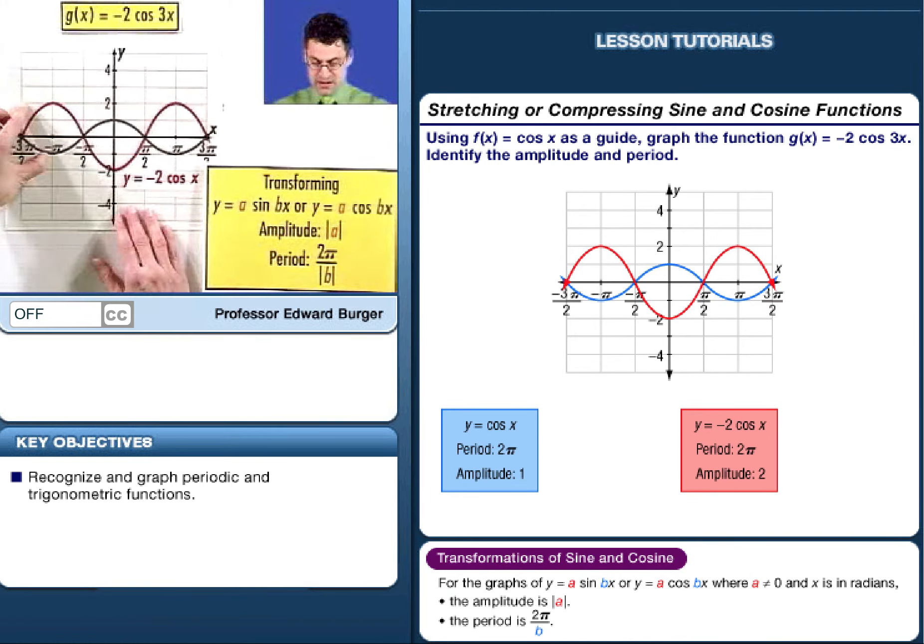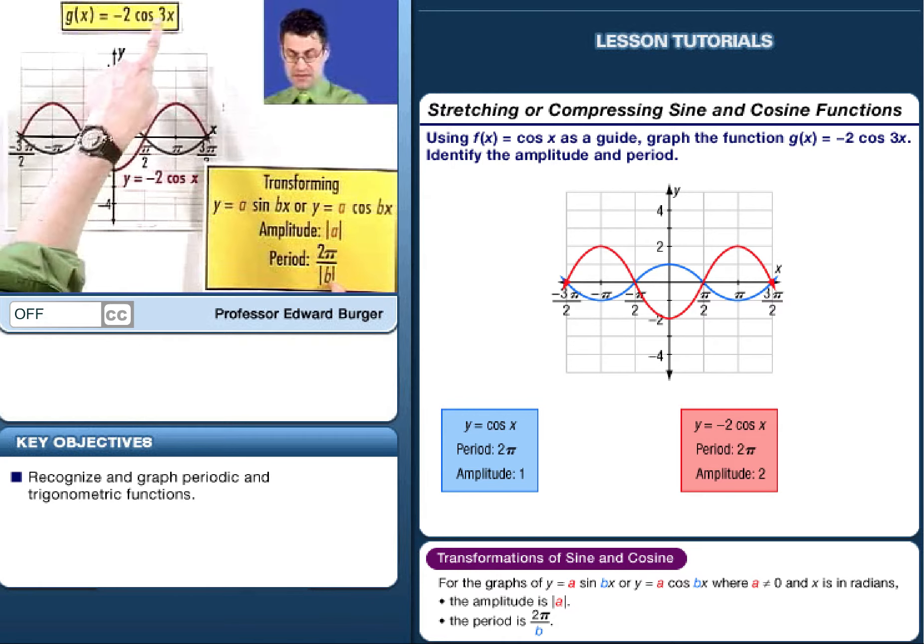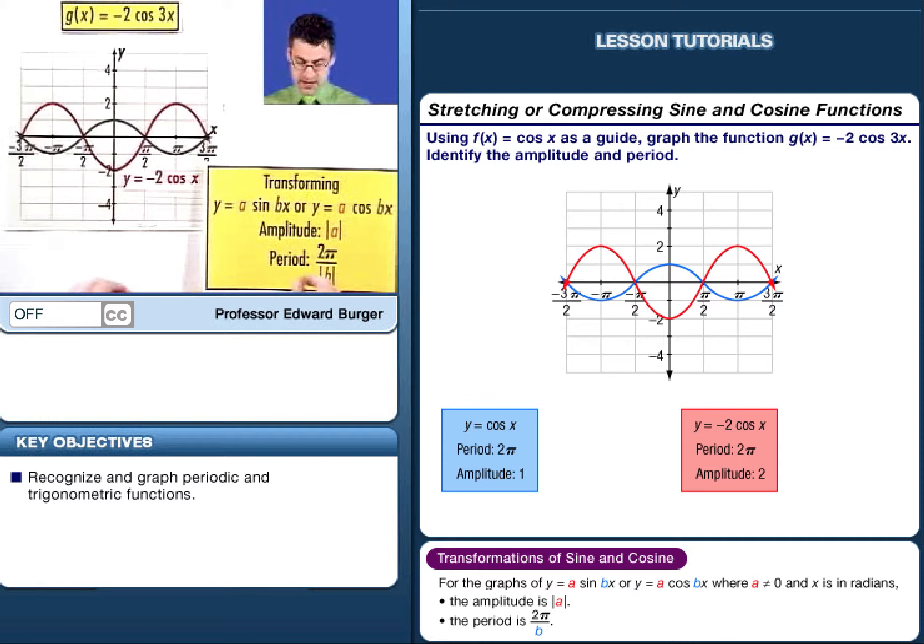Now what we want to do is we either want to compress or expand by changing the period. And how much are we going to change the period by? Well, the period is going to be 2 pi divided by the absolute value of b. In this case, b is 3. So we have 2 pi divided by 3, which is 120 degrees, which means that instead of waiting for 2 pi to make a complete cycle, we're going to actually scrunch that in. We're going to make a complete cycle in actually 2 pi over 3 radians, or 120 degrees. So we're going to see a shrinkage like that.